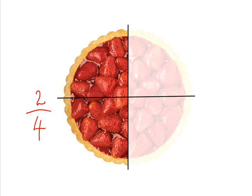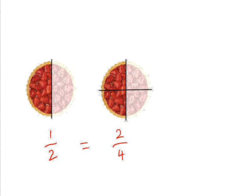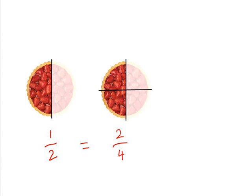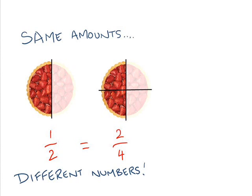And what you'll probably notice is that a half, one over two, is exactly the same as saying two over four. So you can see one half and two fourths are the same thing. Same amount, different numbers.